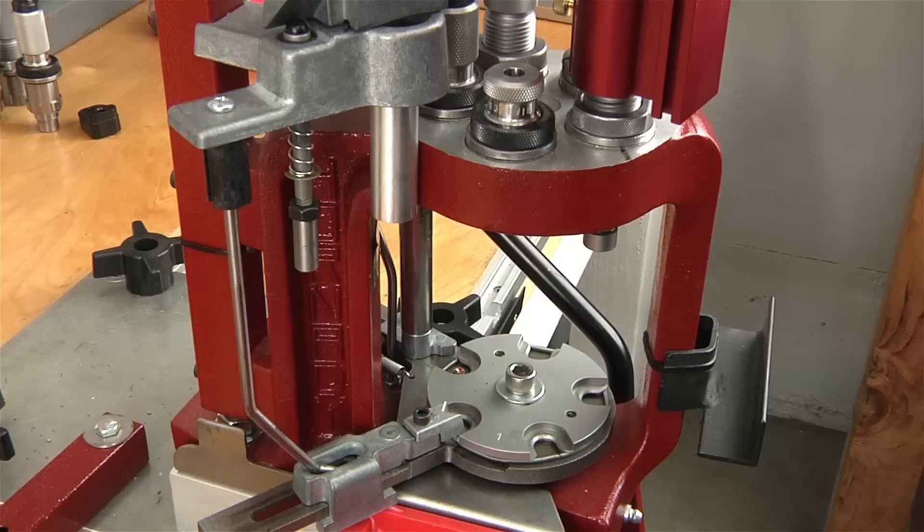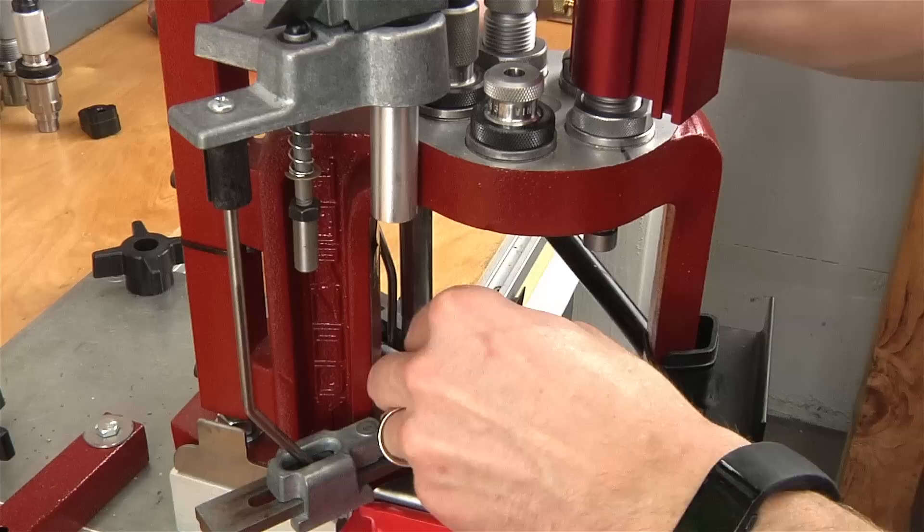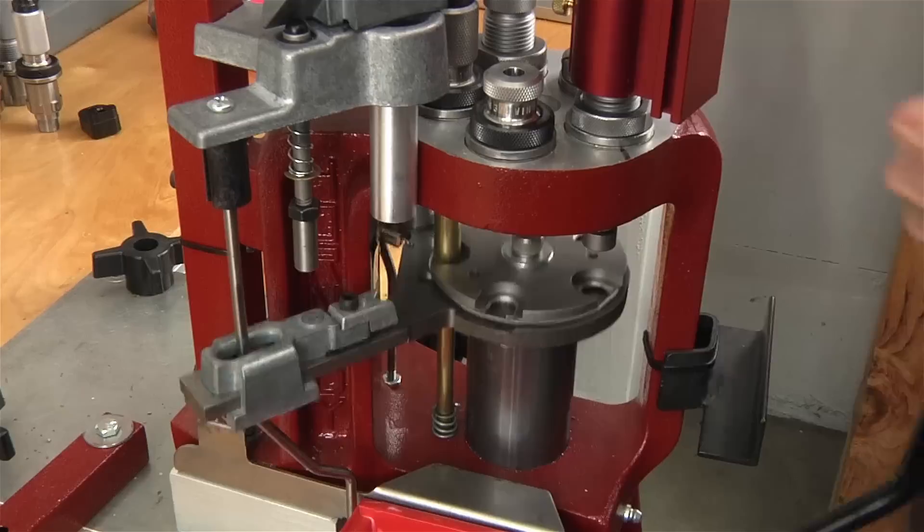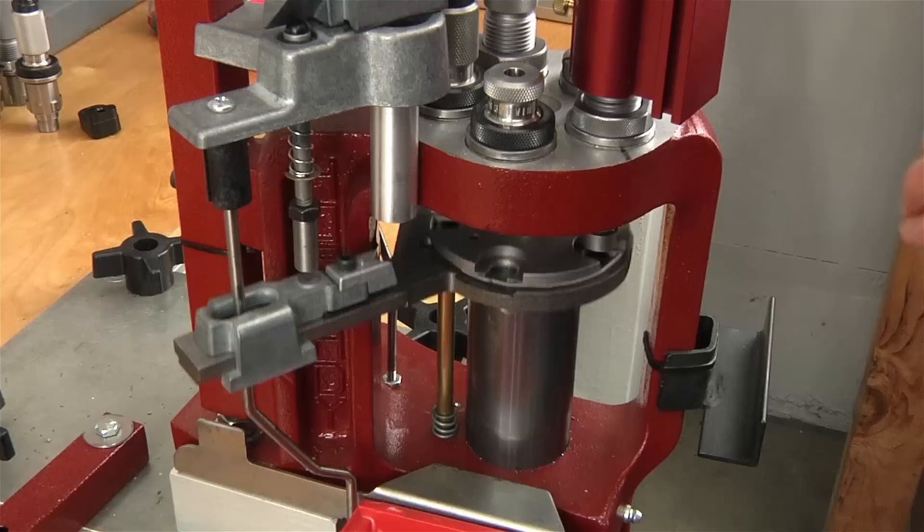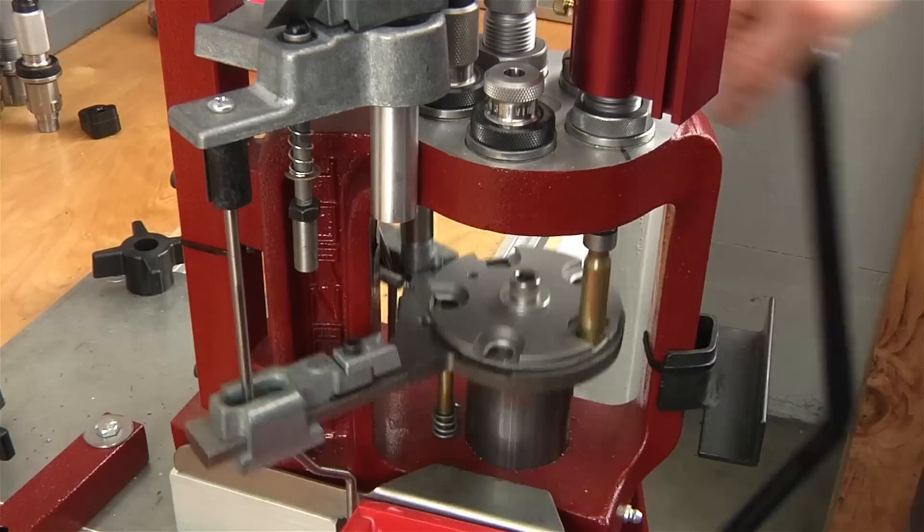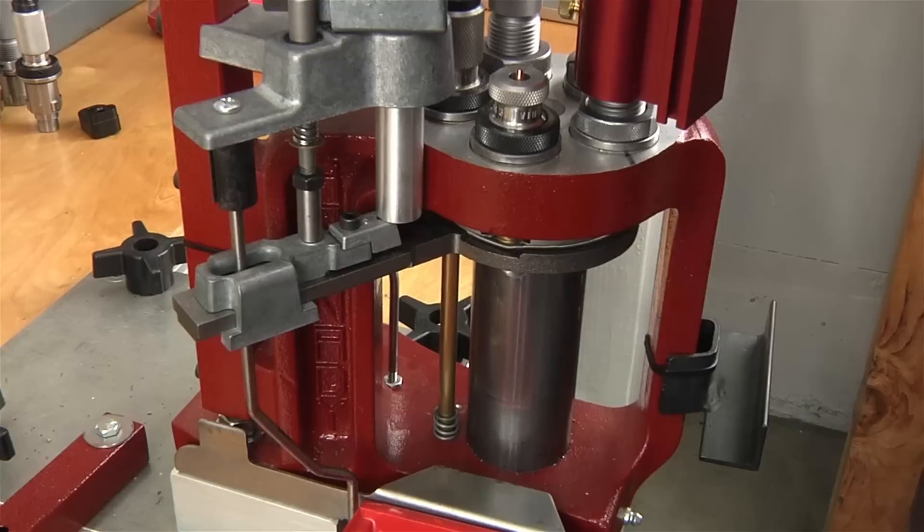Okay, so let's send our first cartridge through. I'm just going to insert it here where the case inserter normally would. Nice and smooth sizing because we used our synthetic motor lube. Priming, dumping a load of powder. We're going to watch up here. Yes, we have a nice powder cop indication there. We're going to get our bullet and then crimp the bullet.